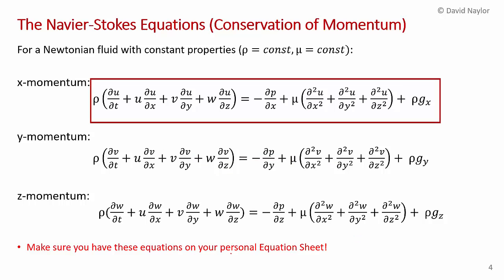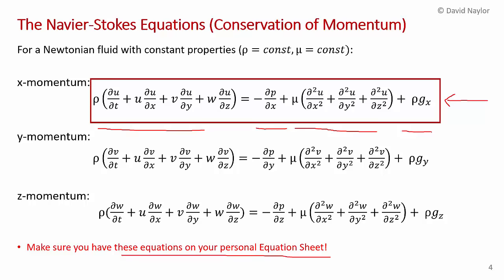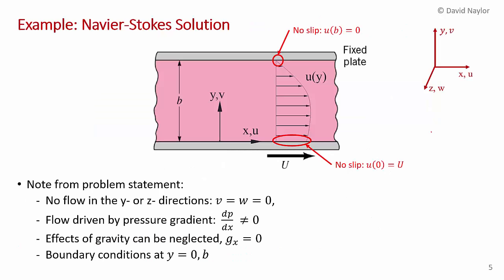The momentum equations are how you get the velocity profile. Here is another slide from the Chapter 4 presentation showing the x, y, and z momentum equations. Since we have flow in the x-direction, we want to use the x-momentum equation. Make sure you have these equations on your personal equation sheet. The x-momentum equation contains acceleration terms, the pressure gradient term, the viscous term, and the gravity term.